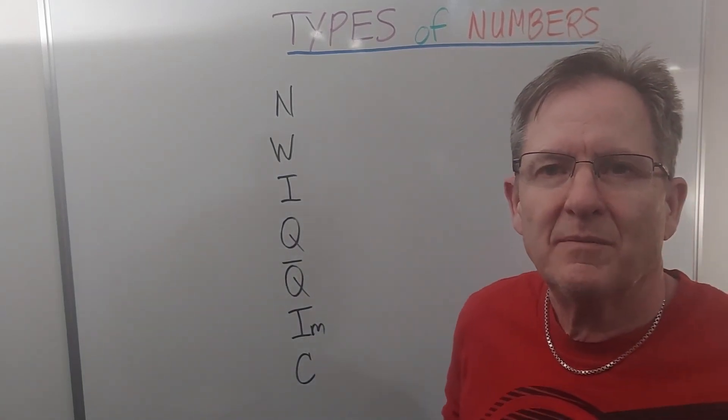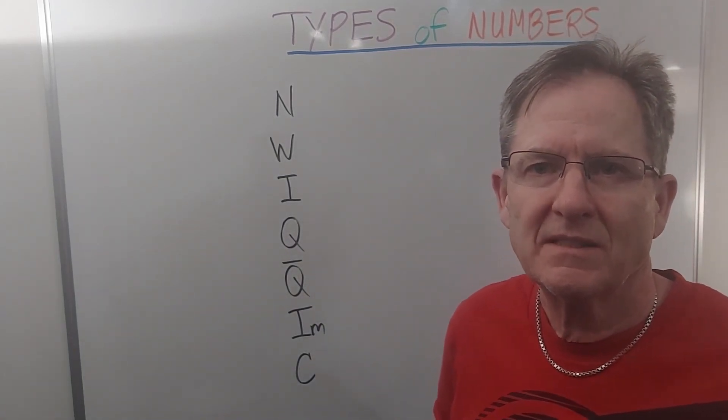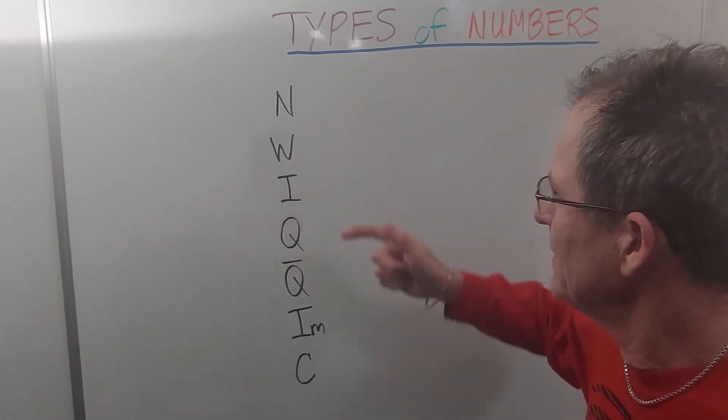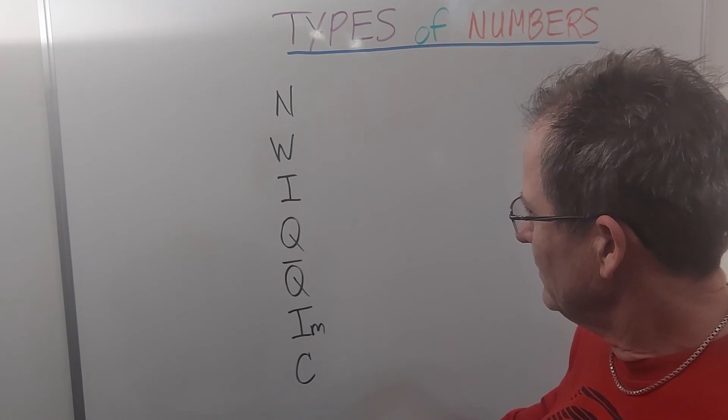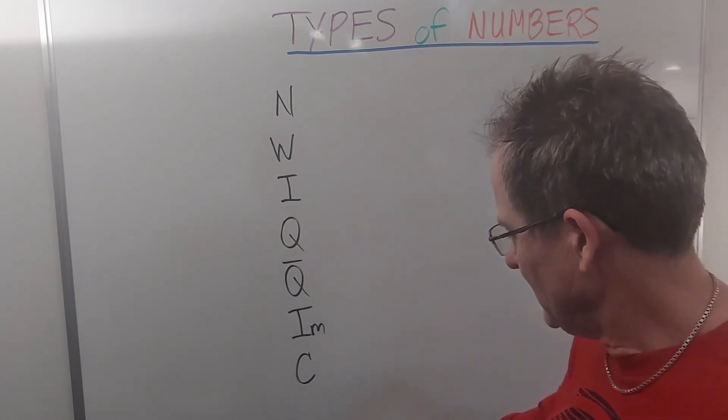Now let's talk about the seven different types of numbers, or sets of numbers, represented by these letters: N, W, I, Q, Q with a bar on top, I_m, and C.